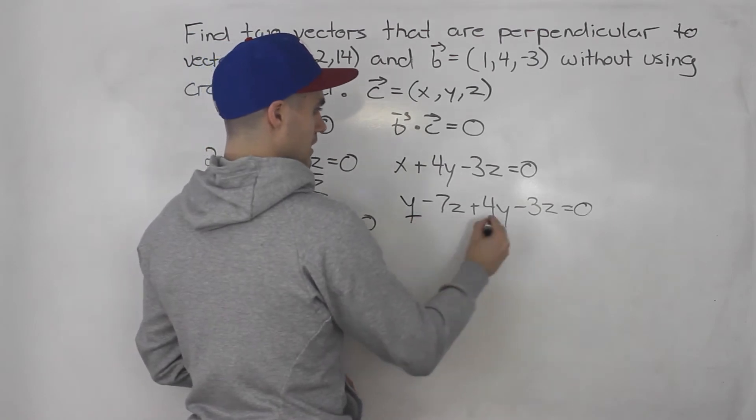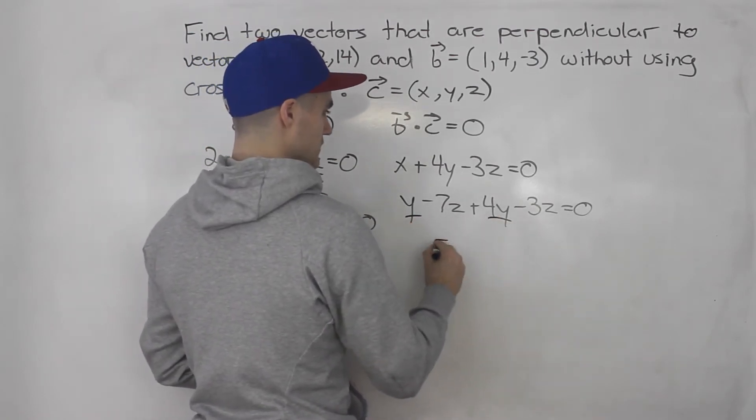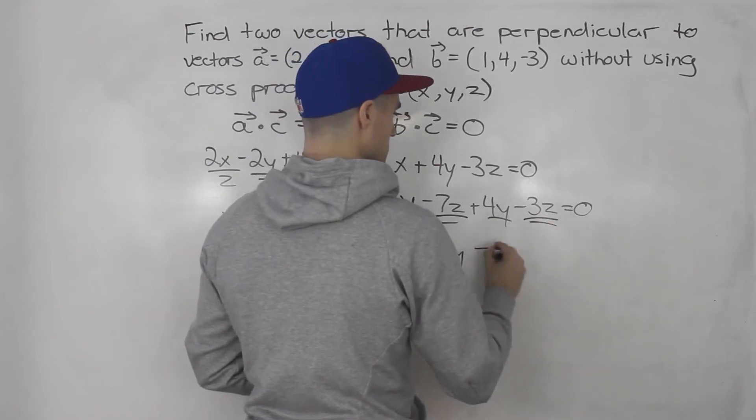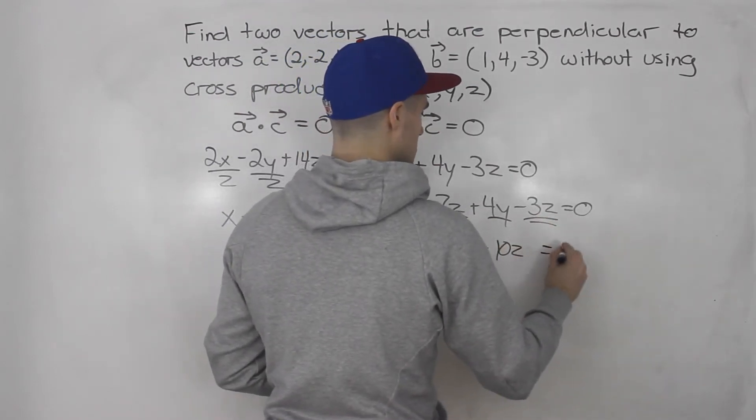So then we got Y plus 4Y is 5Y. And then we got negative 7Z minus 3Z is negative 10Z. That's equal to zero.